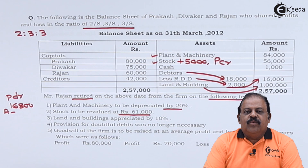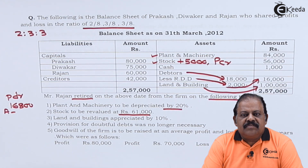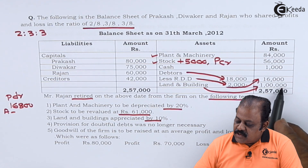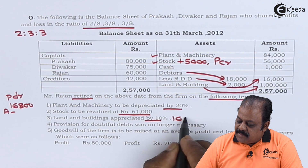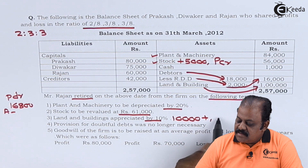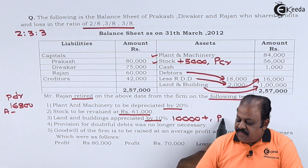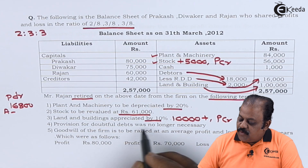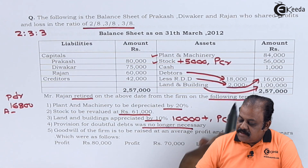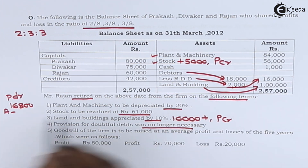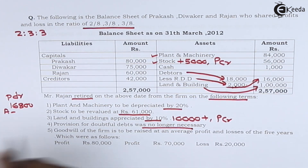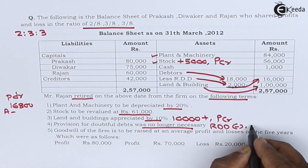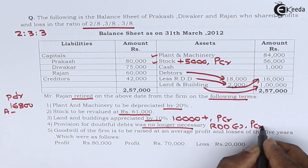The stock increase of 5,000 will be a gain, credited to the profit and loss adjustment account. Land and building appreciated by 10%: land and building is 1 lakh, appreciated by 10% means it has increased by 10,000, which will be credited to the profit and loss adjustment account. Provision for doubtful debts is no longer necessary, so the RDD amount of 2,000 will be deducted, with the second effect being a credit to the profit and loss adjustment account.